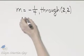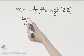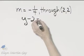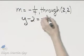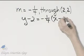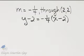And that is y minus the y value of the given point, in our case 2, is equal to slope, negative 1 fourth, times x minus the x value of the given point. And there we have it.